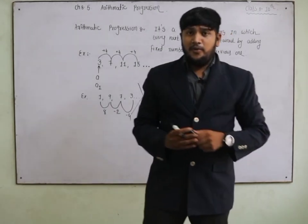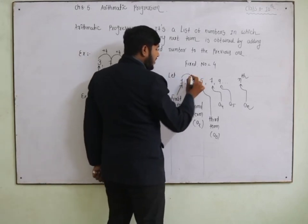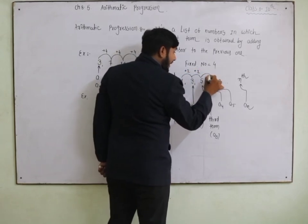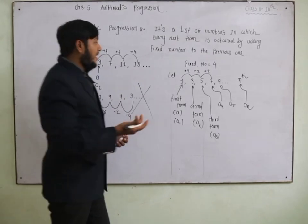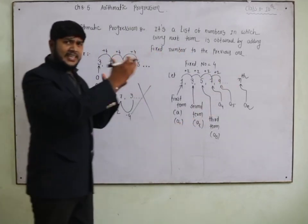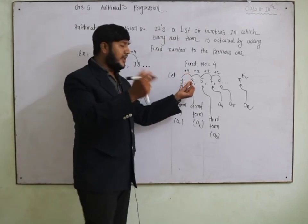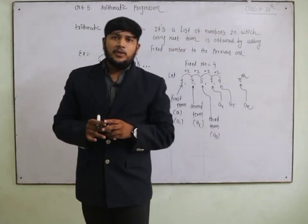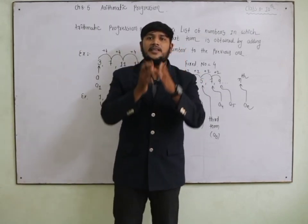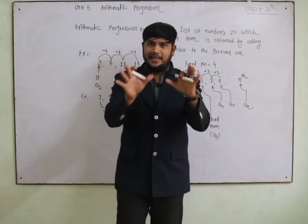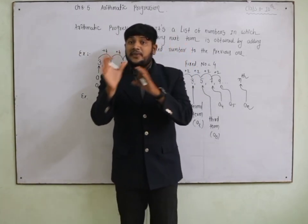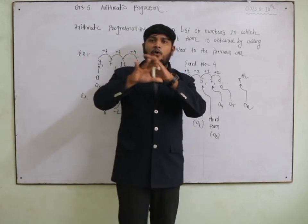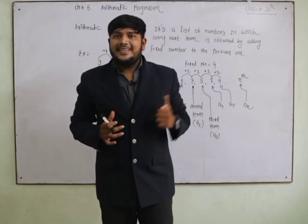In this AP — 1, 3, 5, 7, 9 — the gap between consecutive terms is always plus 2. In each and every step the gap is 2. So AP means: in each and every step your gap, your difference, will be the same. If the difference is not the same, then we cannot call it an AP.